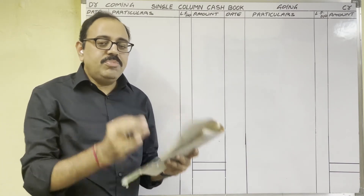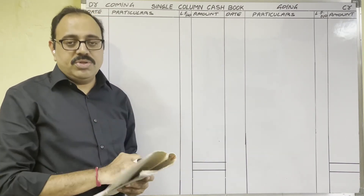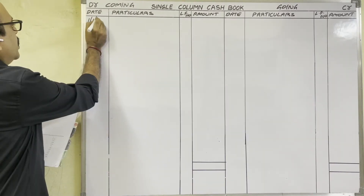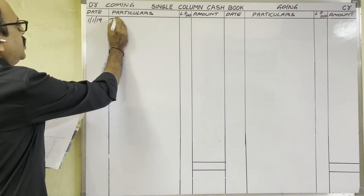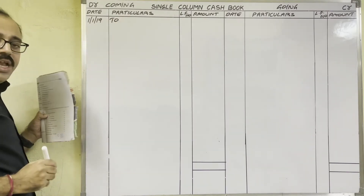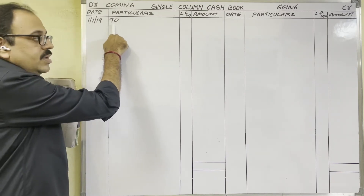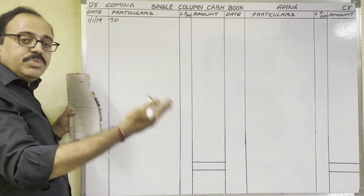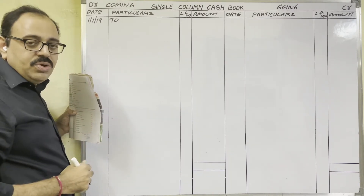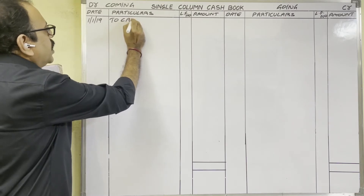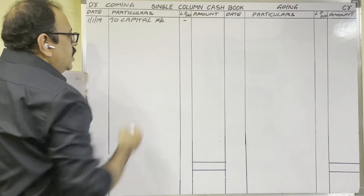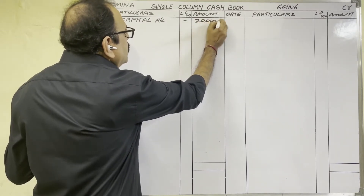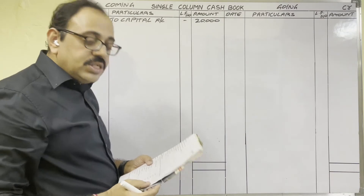On 1st January 2019, business commenced with 20,000 rupees. The owner started business by bringing 20,000 rupees capital into the firm. Cash is coming into the firm, so on the debit side write: date 1st January 2019, particulars — 'To Capital Account', and amount 20,000 rupees. On debit side we start with 'To'; on credit side we start with 'By'.